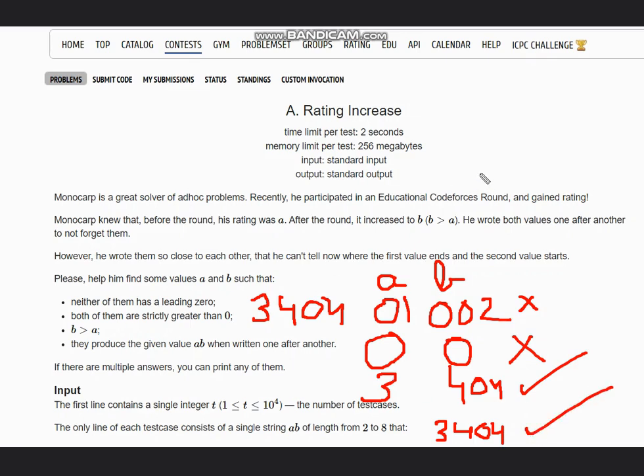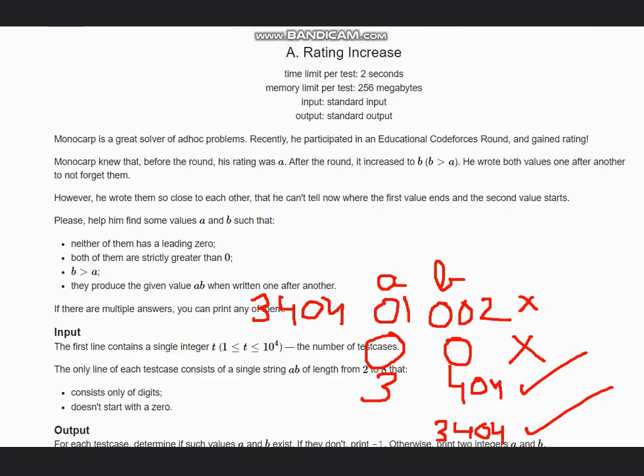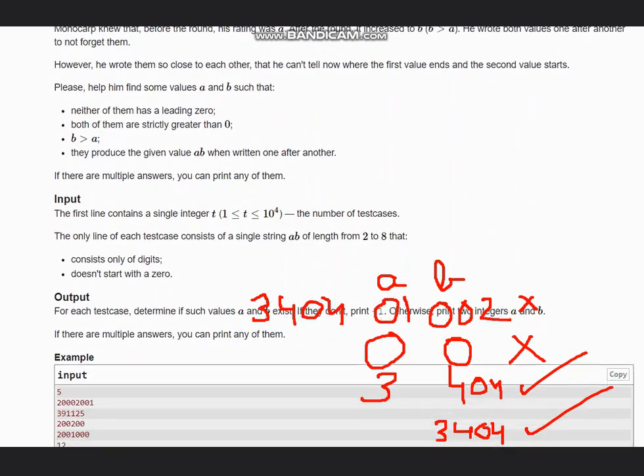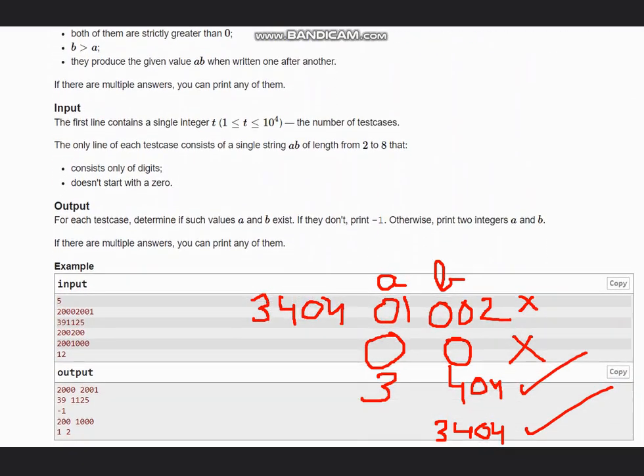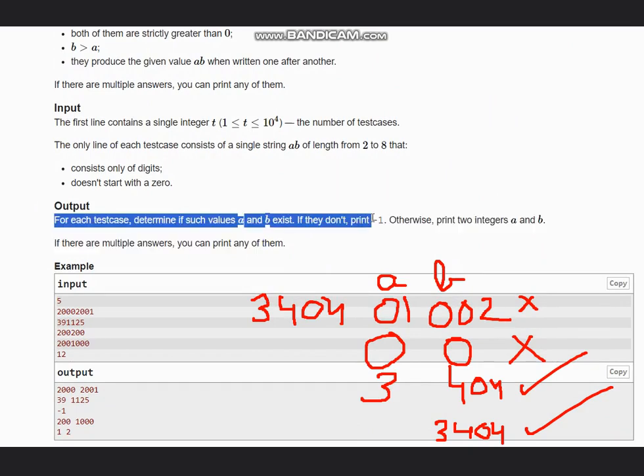Now as we have understood all these conditions, let's move to the test cases. Here we need to output values of A and B. If any values of A and B don't exist, we need to print minus one.